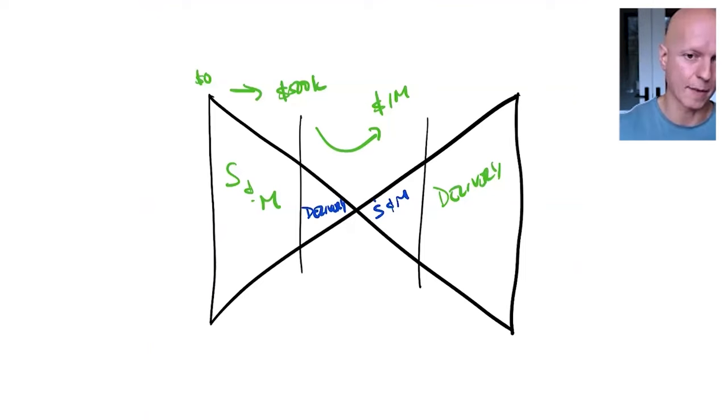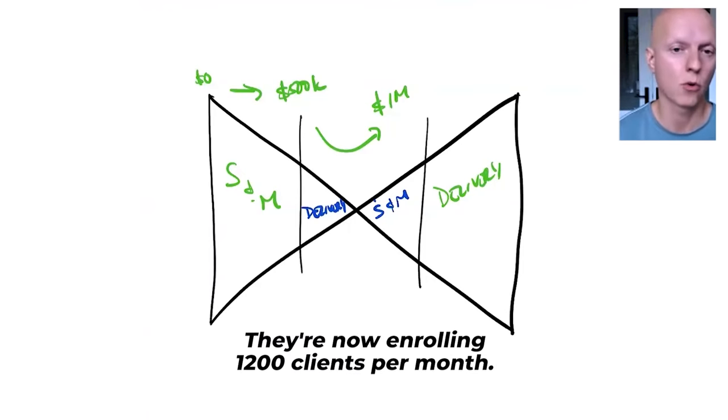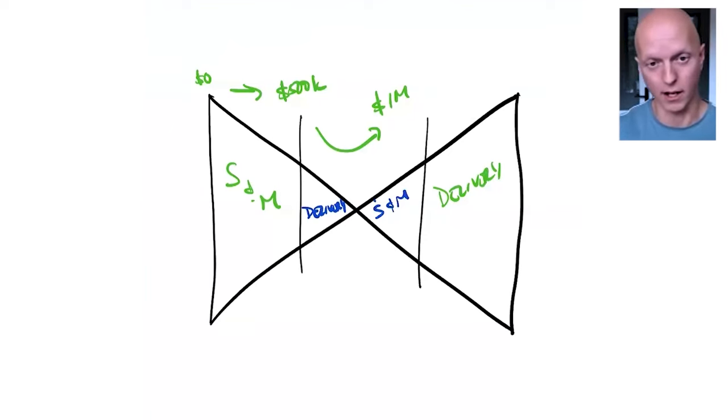So three months later during the pandemic, they're doing six figures a month, about a hundred and some odd. By March, April of 2020, they're above 352,000. I spoke to them. They're now enrolling 1,200 clients per month into their program online, helping people with Hashimoto's. So do you think delivery becomes a big issue? You better believe it. They've got a sales team, they went from a few employees to, I think they're close to a hundred or just north thereof right now, but that's all happened in less than two years.